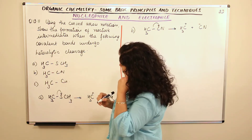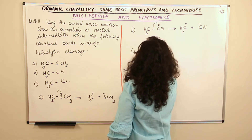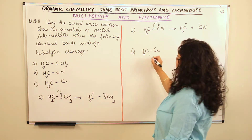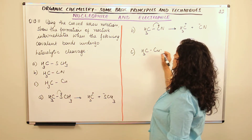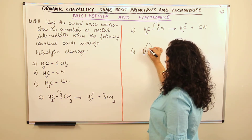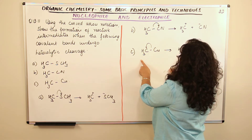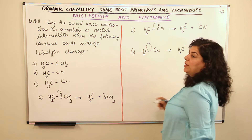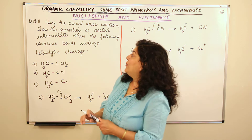Third compound is CH₃Cu. Copper is a metal. Carbon is more electronegative than a metal, so electrons will move toward carbon. The curved arrow goes from the C–Cu bond toward carbon. You get: CH₃⁻ (carbanion, negatively charged) plus Cu⁺ (copper becomes positively charged, a copper ion). So this was question 12.11.